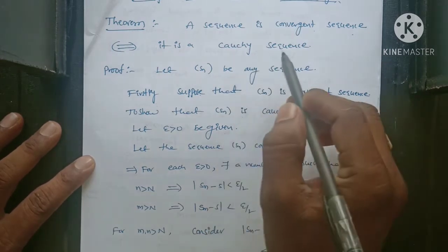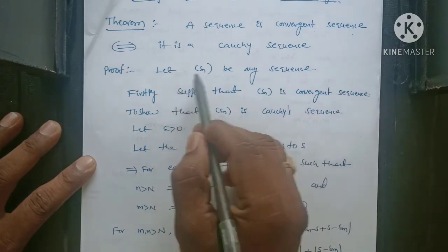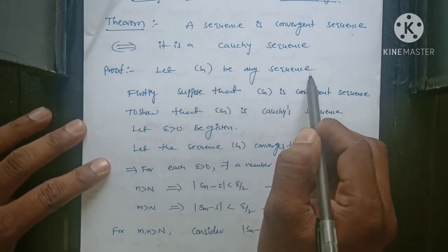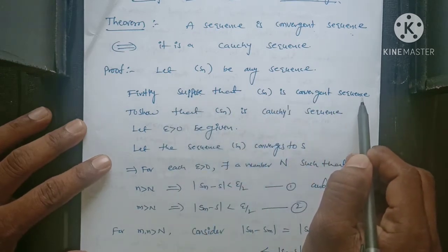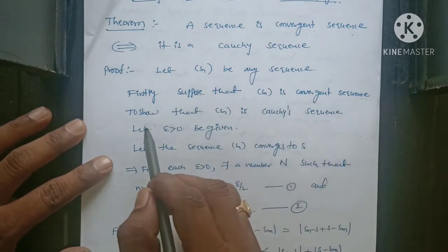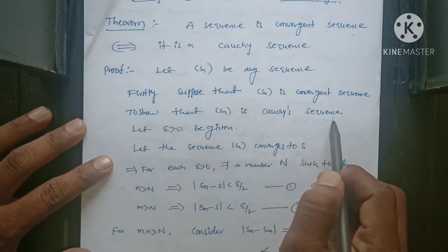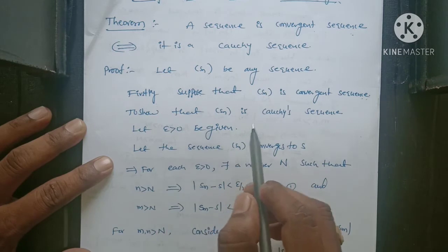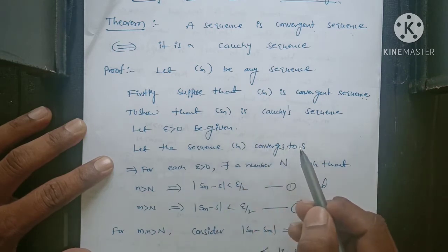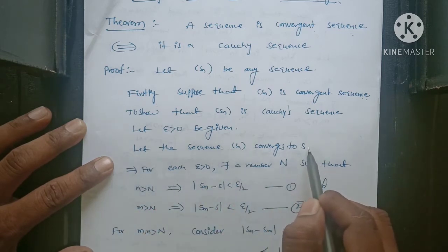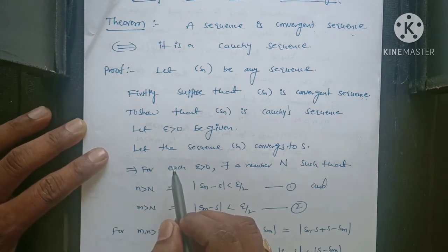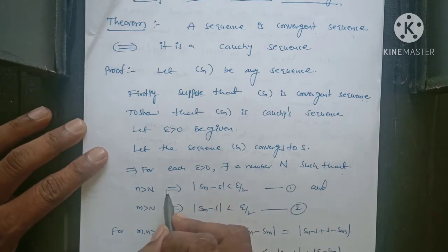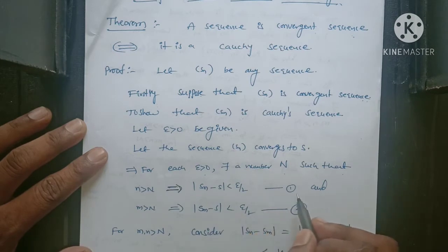Now firstly, I am taking the sequence Sn as a convergent sequence. We are going to prove that the sequence is also a Cauchy sequence. Let epsilon greater than 0 be given. Every convergent sequence converges to a number L. Let the sequence Sn converge to a number L. By definition of convergent sequence, for each epsilon greater than 0, there exists a number capital N such that n greater than capital N implies mod(Sn minus L) less than epsilon by 2. This is equation 1.